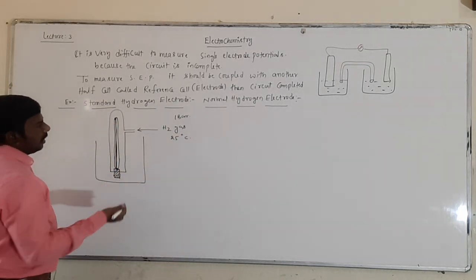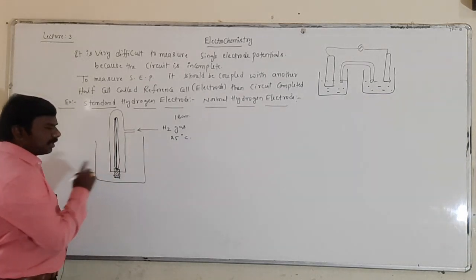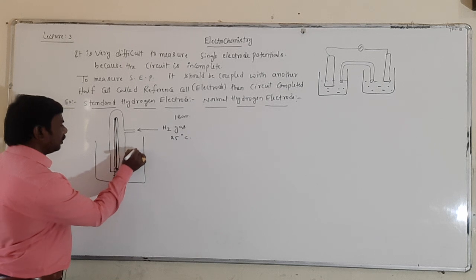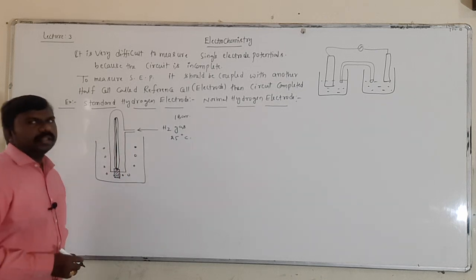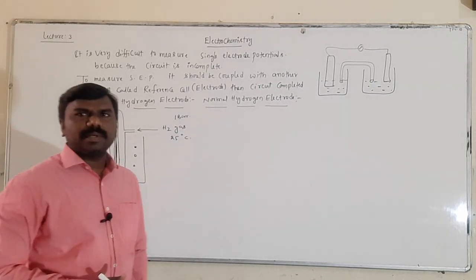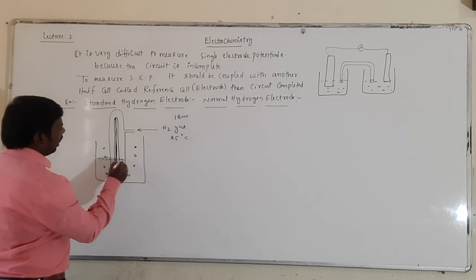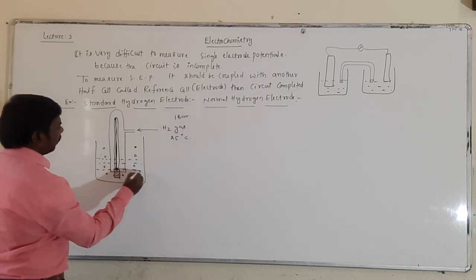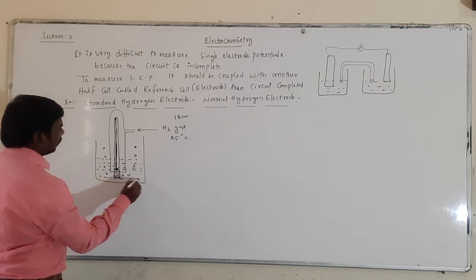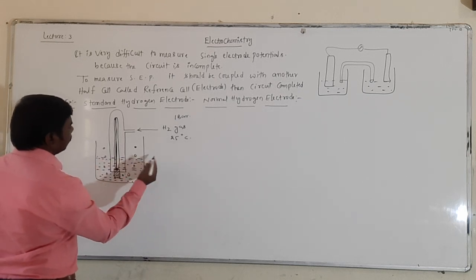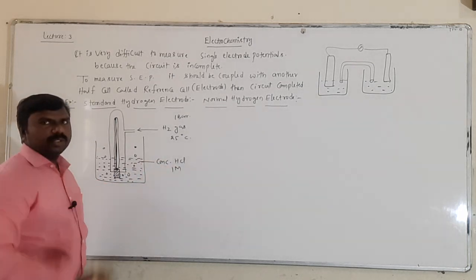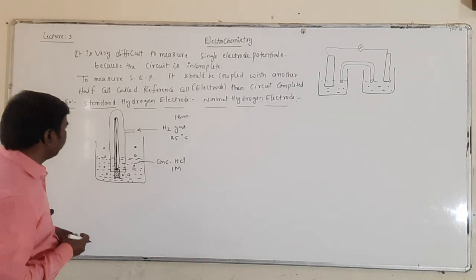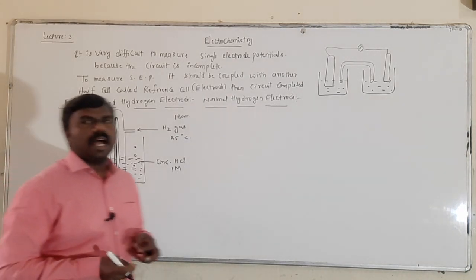A part of the hydrogen gas is bubbled out from the liquid. The platinum rod is taken in an acidic solution — HCl or H₂SO₄. The acidic solution used is concentrated HCl with a molarity of 1 molar. This setup is the normal hydrogen electrode.